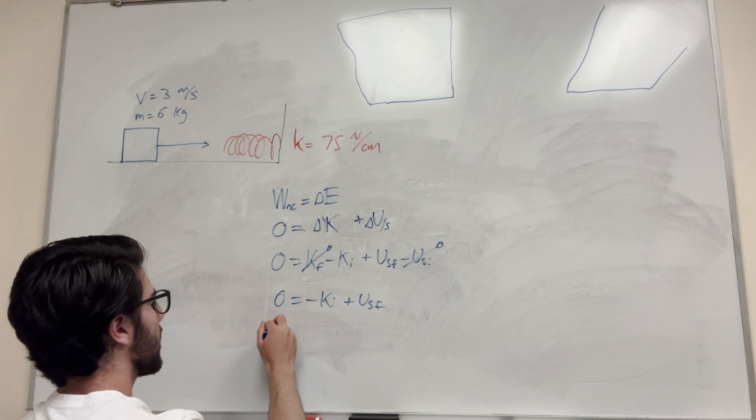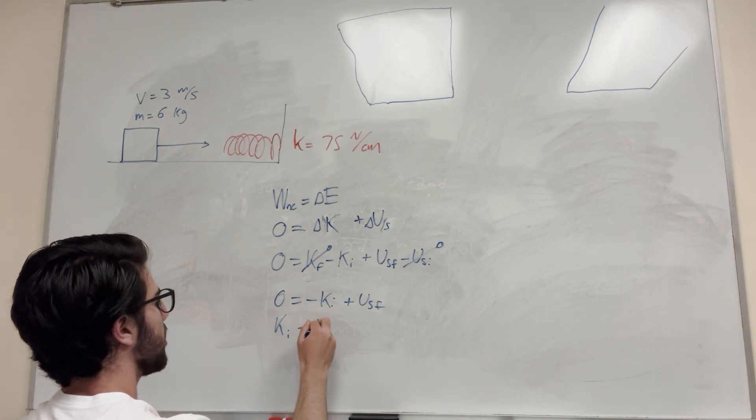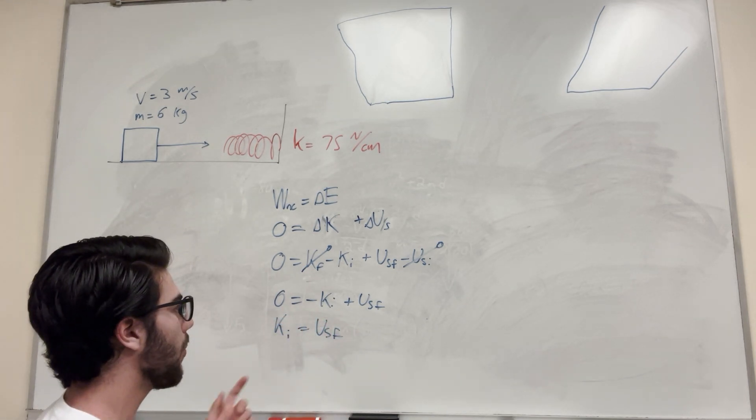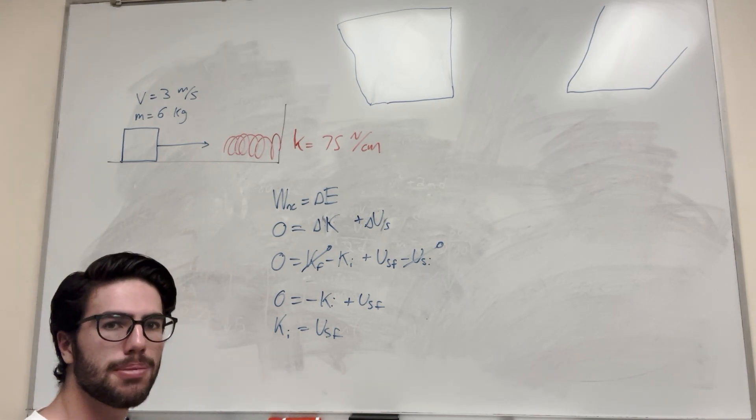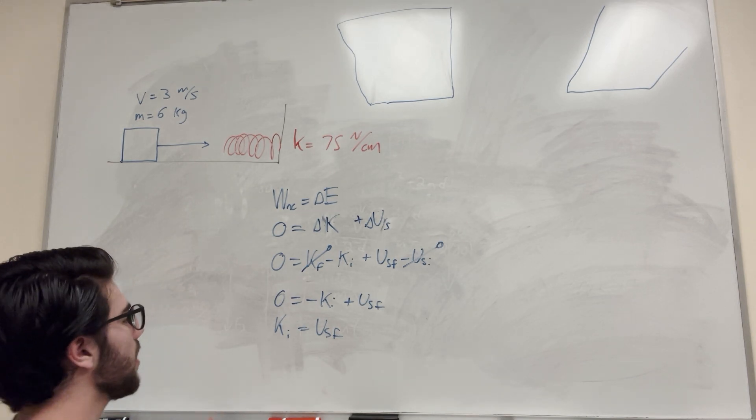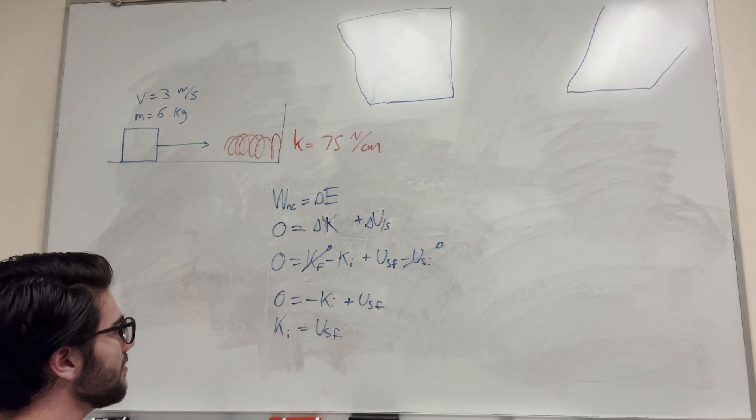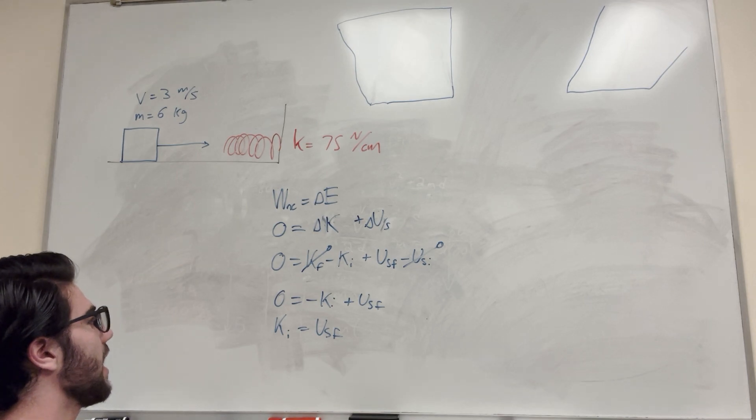So then we're just left with the equation: zero is equal to negative K initial plus U_S final, which I'm going to rearrange to get K initial is equal to U_S final. So kind of a roundabout way to get to this point, but it's a really nice systematic way to make sure you don't forget anything, you don't mix up your sides. That's how you got to do it, in my opinion.